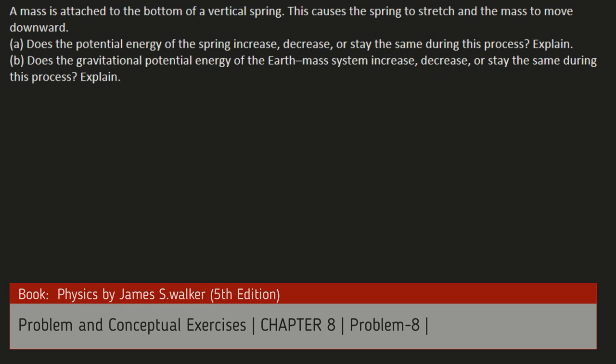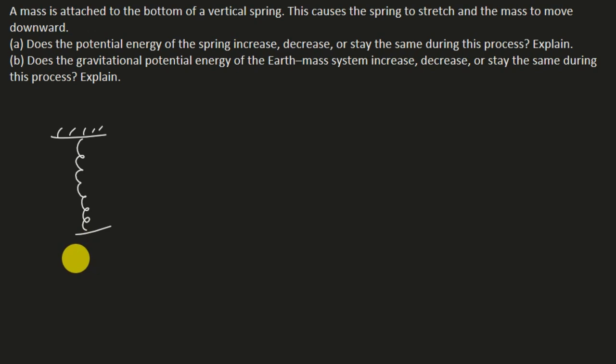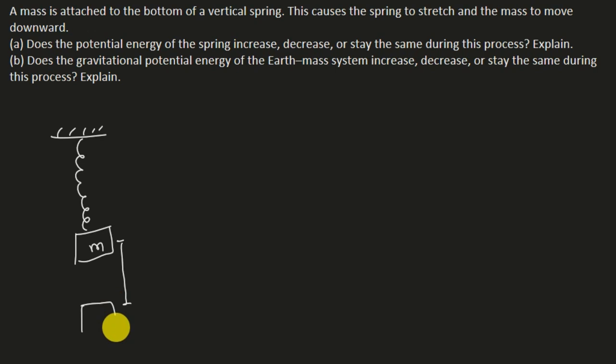This is the first question. A mass M is attached to the bottom of a vertical spring. When the mass is attached, the spring is stretched, and the mass reaches its final position below the natural length of the spring.